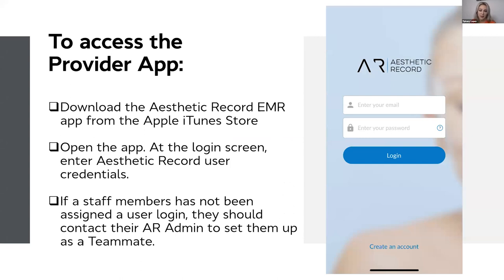The first thing you need to know is that you have to be on the provider app. In the current scenario, this integration is only going to show up on the provider app — it's not in the control center. So if you're using this integration to check point balances, it has to be on the provider app. Go to the app store on your iPhone or iPad, get the Aesthetic Record EMR app, download it, and use your login credentials.